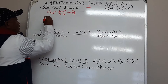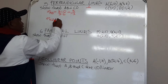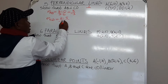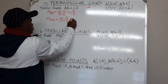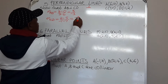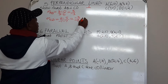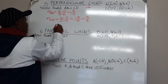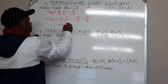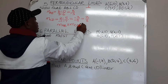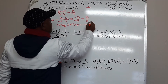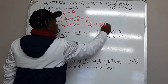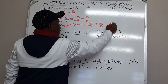From there, we get the gradient of CD. We will have 2 minus 5 over negative 1 minus 7, which gives us negative 3 over negative 8. And negative over negative, the answer is positive. So, let's multiply the two. The gradient of AB multiplied by the gradient of CD: negative 8 over 3 multiplied by 3 over 8, and the answer is negative 1.